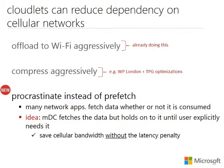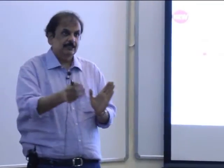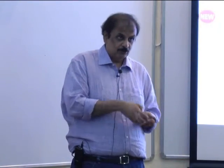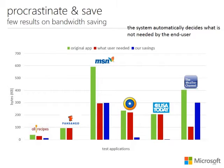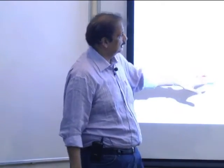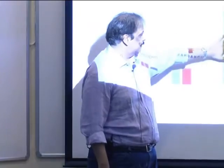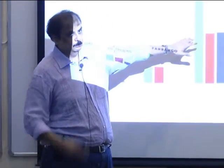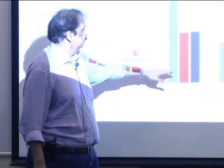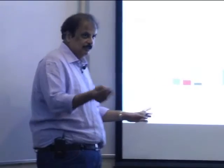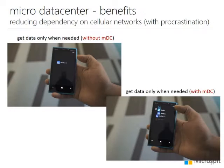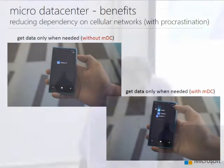The idea is that the cloudlet, which is very close to you — not 70-80 milliseconds away — fetches everything for you, but holds it and doesn't pass it to your device yet. When you actually go to the next page, because the cloudlet is only a few milliseconds away, it sends it immediately and you hopefully don't notice any difference. We tested this against many applications: the green is how many bytes the app downloads, the red is how many you actually use, and the blue is how much you save by not delivering until needed — procrastinating. In some applications, like a weather app, the savings are quite large.